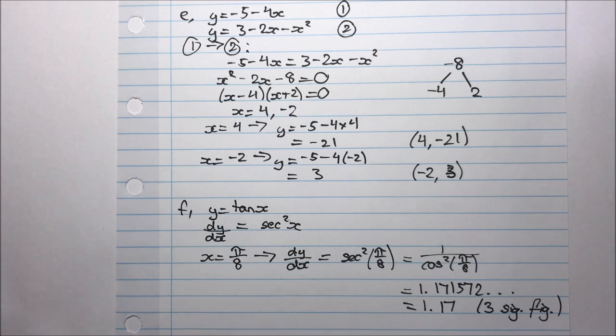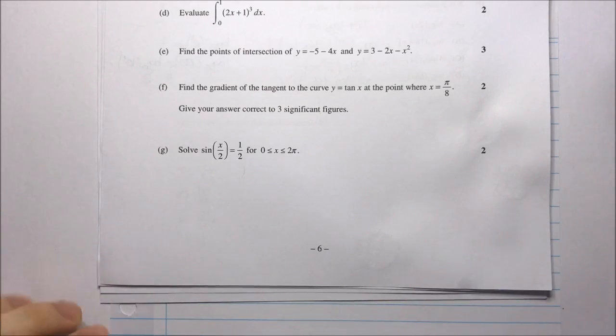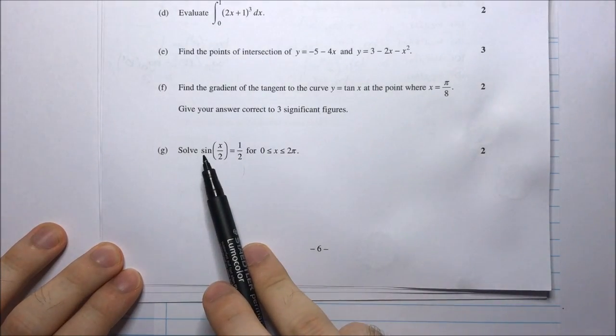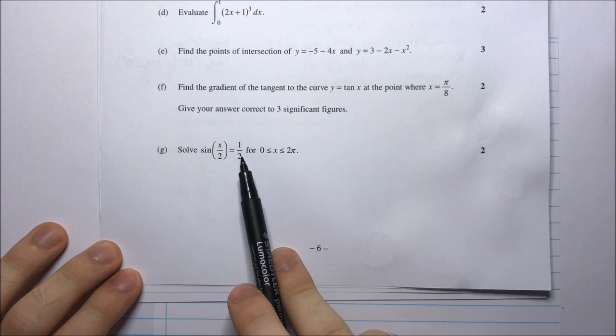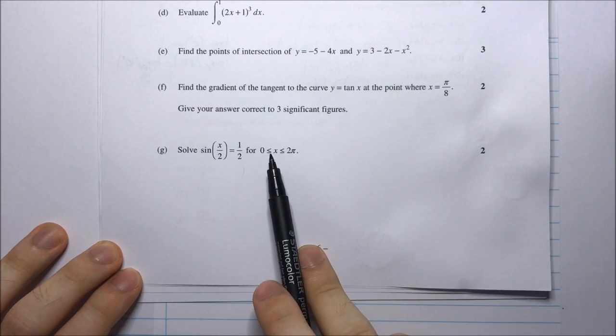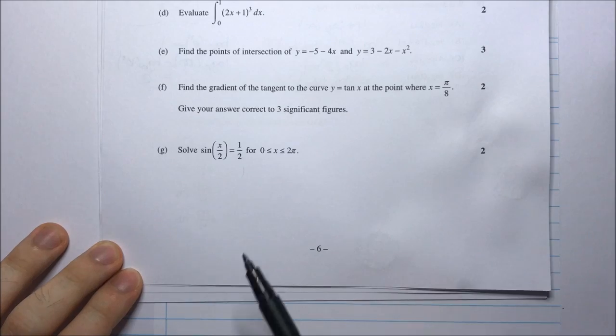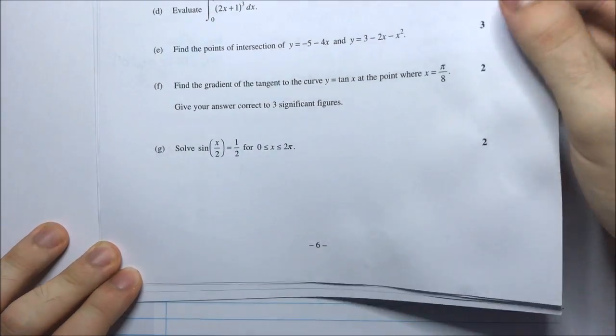And let's get some more paper for the last part. For the final part, part g. Solve sin(x/2) = 1/2 for 0 ≤ x ≤ 2π. So my domain is between 0 and 2π.